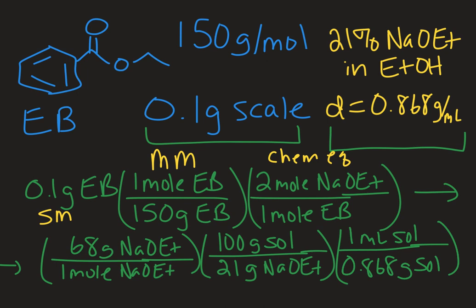And then I ultimately want to know how much I'm going to measure out. And so I want to go from moles to grams, and in this case, milliliters, because it's liquid. So then I can use the molar mass of sodium ethoxide to go to grams of sodium ethoxide. And then here is where I use my weight percent. Because the solution I have isn't all sodium ethoxide, only 21% of it is. So there's 21 grams of sodium ethoxide in 100 grams of the solution.